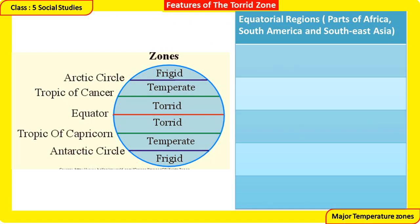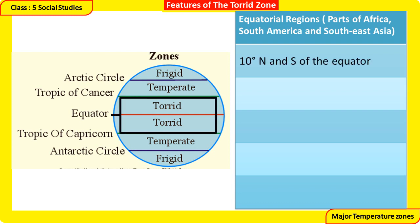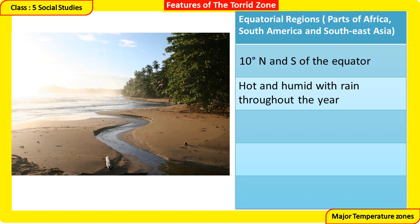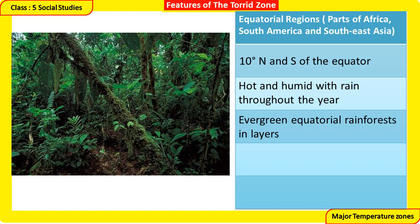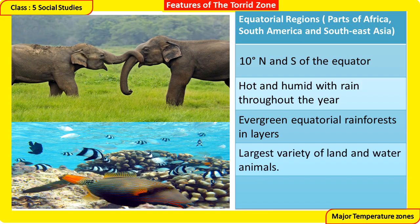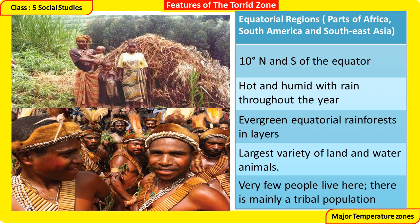Features of the Torrid Zone — Equatorial Regions: located in parts of Africa, South America, and Southeast Asia, within 10 degrees north and south of the Equator. The climate is hot and humid with rain throughout the year. Vegetation consists of evergreen equatorial rainforests in layers. These regions have the largest variety of land and water animals. Very few people live here — mainly a tribal population.